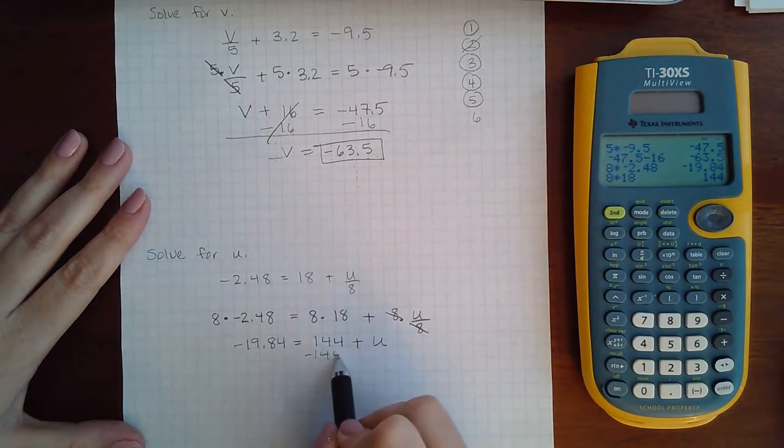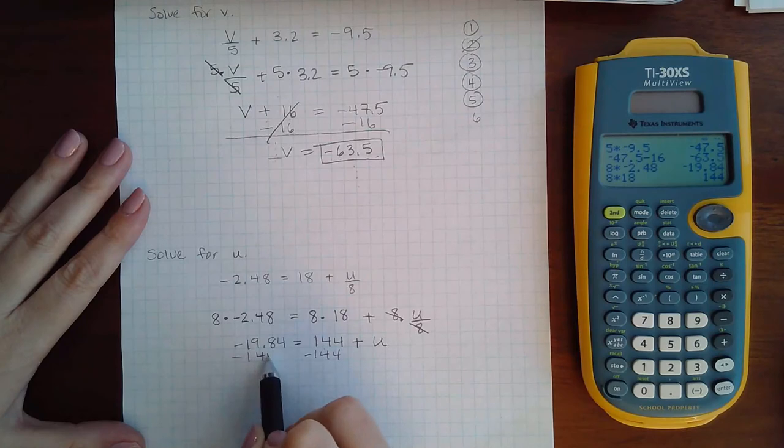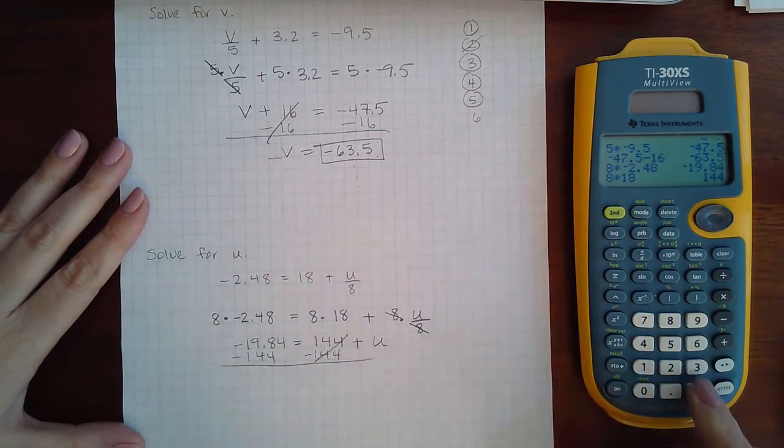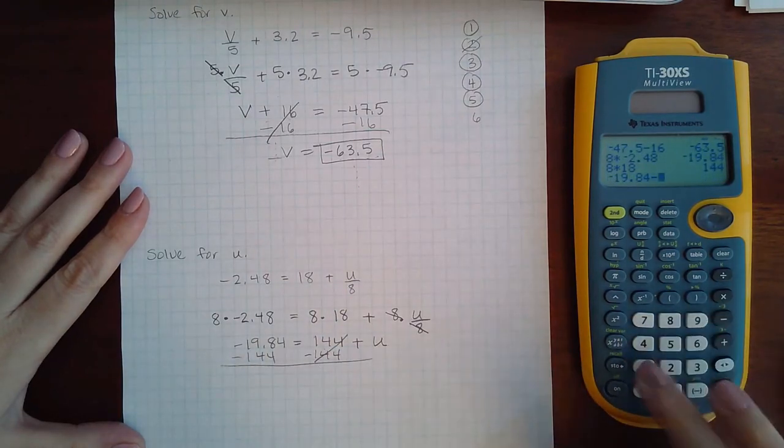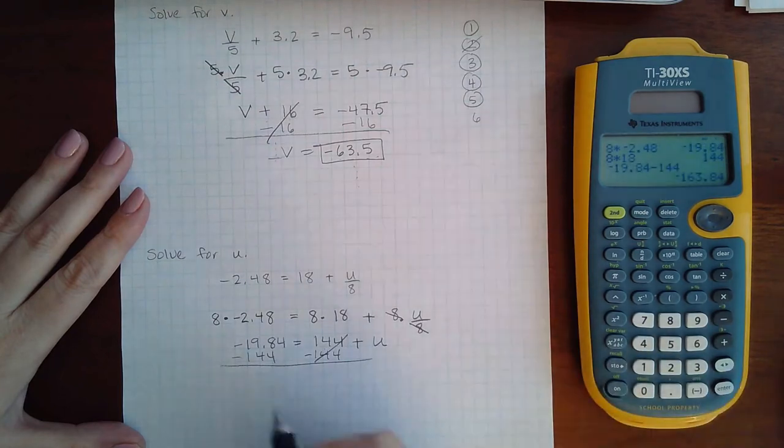So this 144 needs to get subtracted to the other side, so I have negative 19.84 minus 144, that gives me negative 163.84.